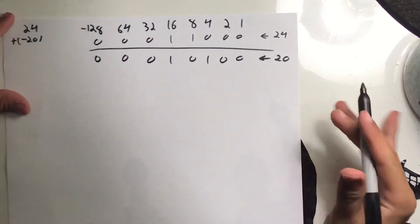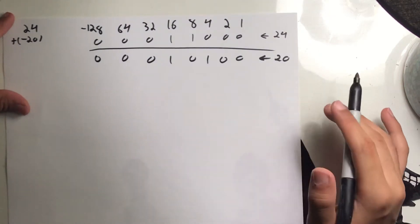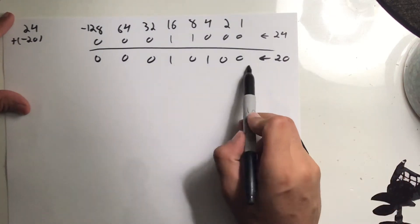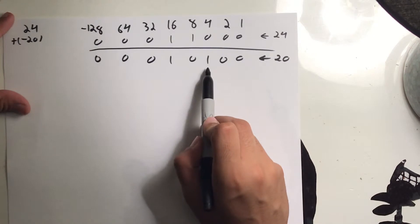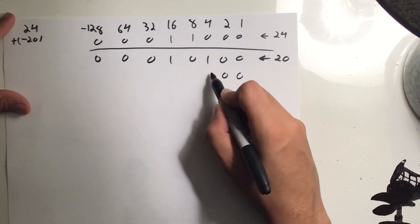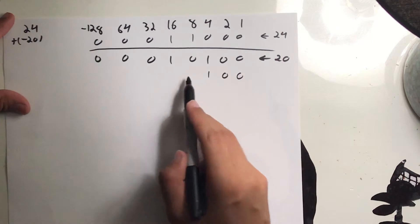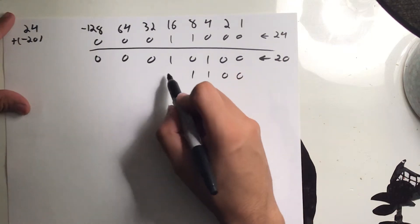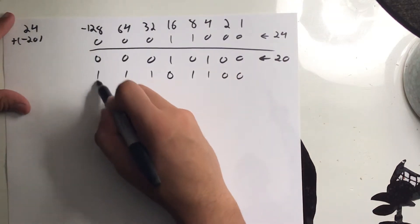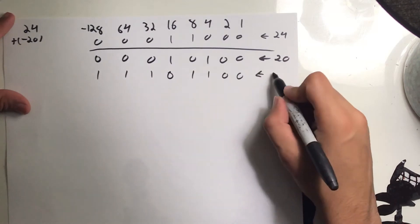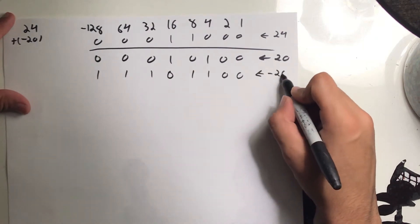We take 20 and apply two's complement to make it negative 20. Find the first instance of a 1 — which is the rightmost 1 — keep everything to the right the same, then flip all bits to the left. This becomes: 1, 0, 1, 1, 1. This is now negative 20.